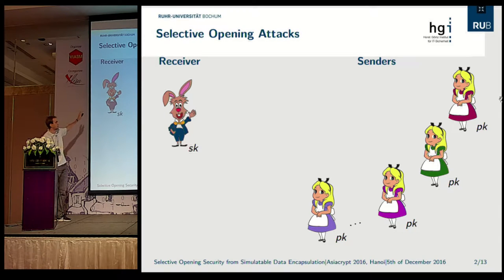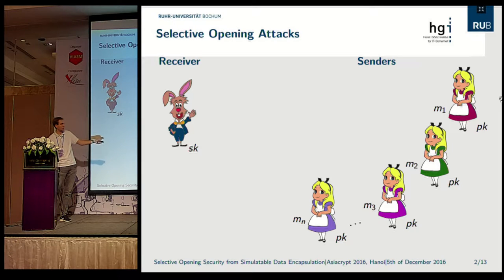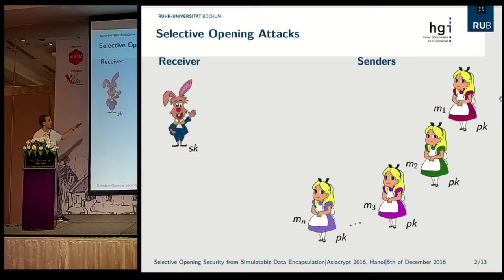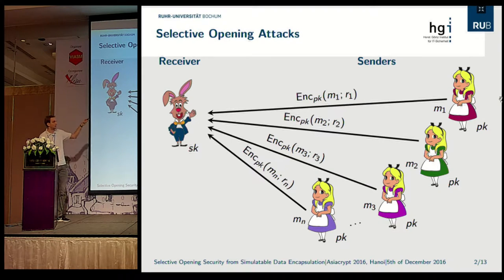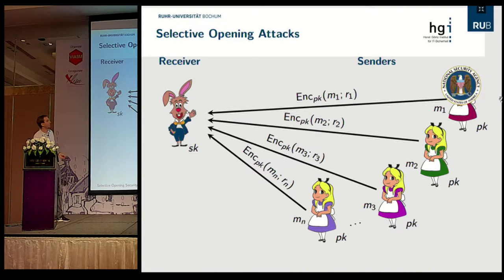There is one receiver on the left and a whole group of senders on the right hand side who have the public key corresponding to the secret key of the receiver. All the senders are interested in picking messages and sending them to the receiver by means of public key encryption — meaning they all pick fresh randomness, encrypt the message, and send it via some public channel to the receiver.